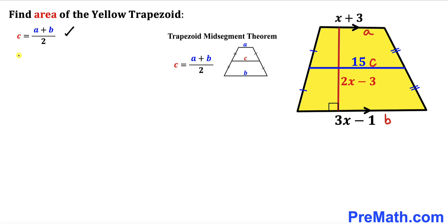C in our case is 15 equals to A in our case is x plus 3 plus B in our case is 3x minus 1 all over 2.